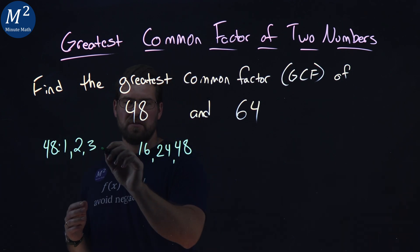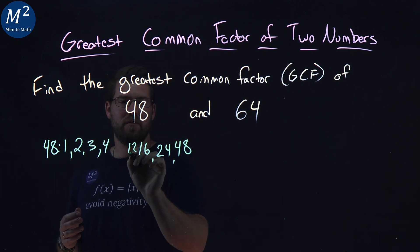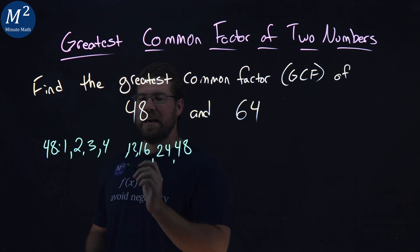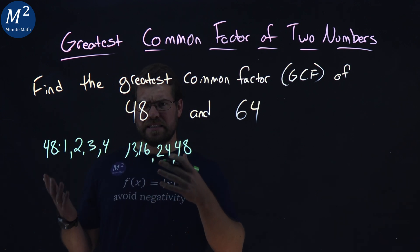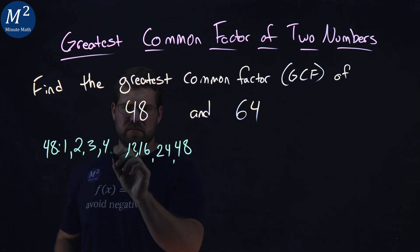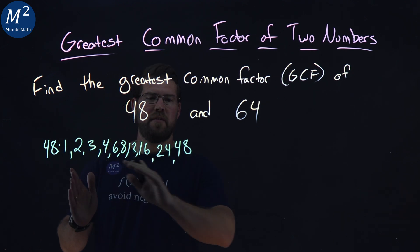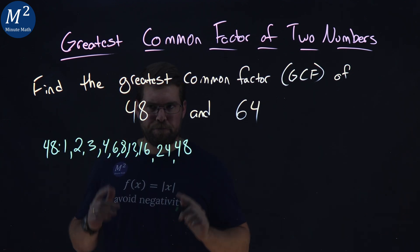Then 4 and 12 — 4 times 12. And lastly, we have 6 times 8. And now we've listed all the factors that go into 48.